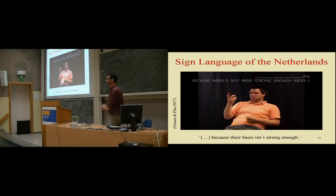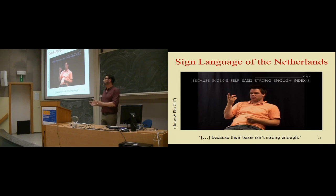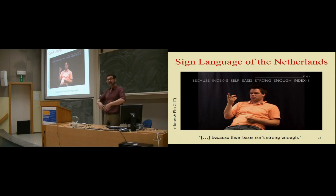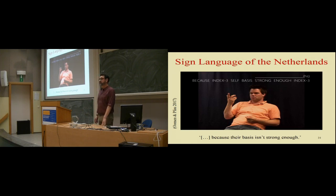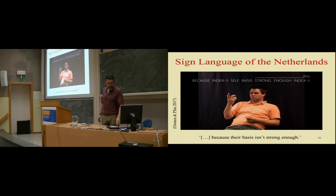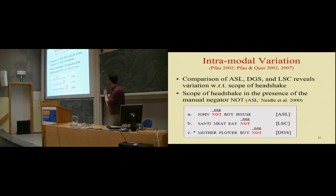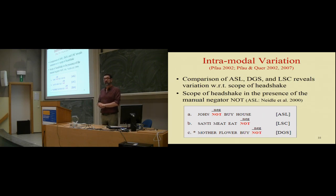Moving towards cross-modal typology: how does this compare to spoken languages? One could argue that Italian Sign Language makes use of a negative particle which appears at the end of the sentence, and this particle is simply specified in the lexicon for a head shake — it's a lexical feature. German Sign Language is different because the head shake is also an independent element: it can occur without the particle and minimally accompanies the verb. This leads me to suspect the head shake is something like an affix — a simultaneous affix.